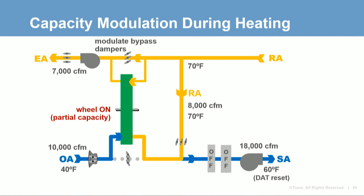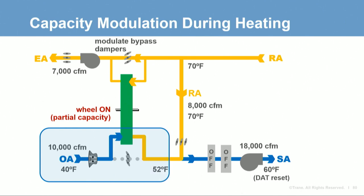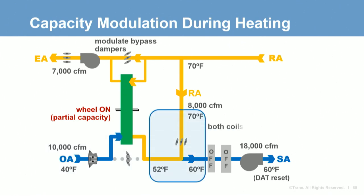With less warm air passing through the exhaust side of the wheel, the outdoor air does not heat up as much, warming to only 52 degrees. The resulting mixed air temperature is now 60 degrees, so neither the cooling coil nor the heating coil need to operate. The approach for modulating capacity differs among the various devices.